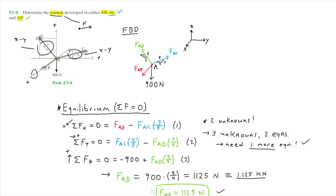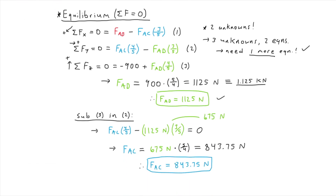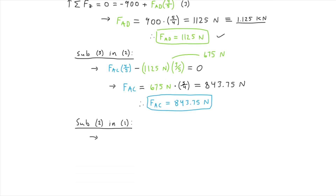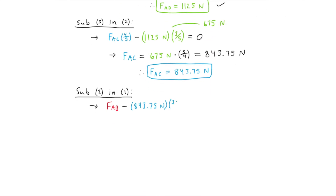Now we just need to find the tension in cable AB. Using equation 1 and substituting the value of FAC, we have FAB minus 843.75 newtons times three fifths equals zero. Isolating FAB, this simplifies to 506.25 newtons, so FAB equals 506.25 newtons.